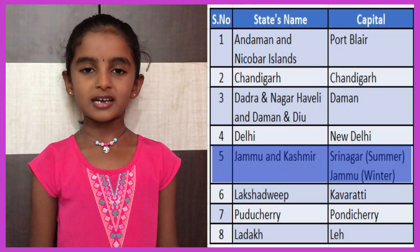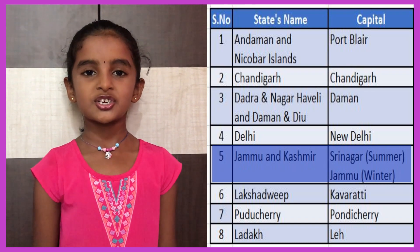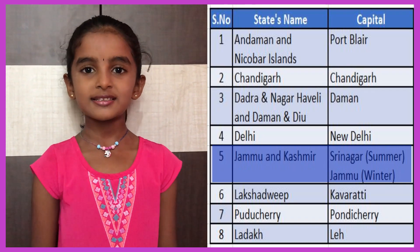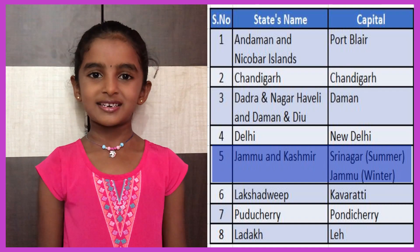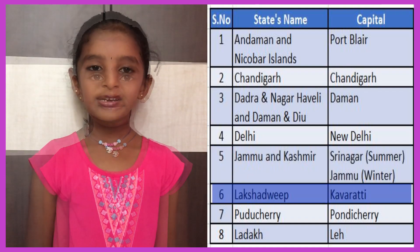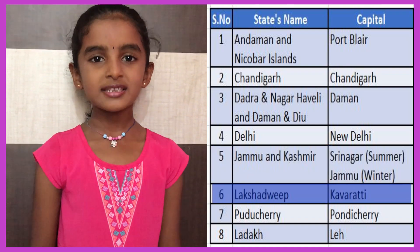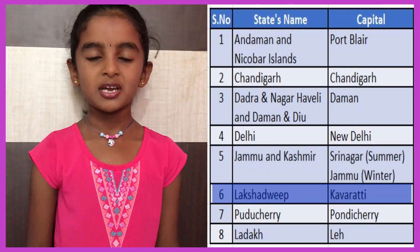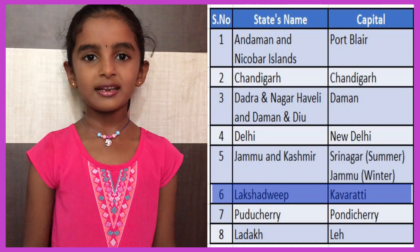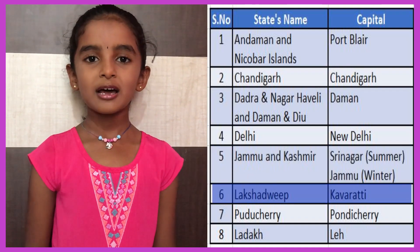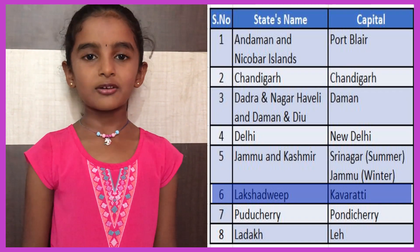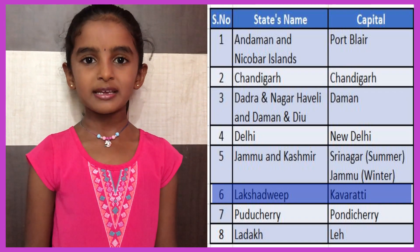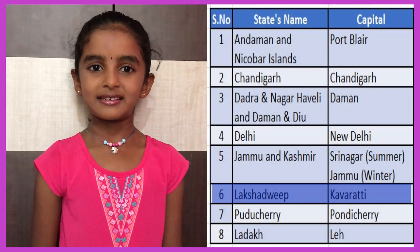The capital of Jammu and Kashmir is Srinagar in summer and Jammu in winter. Our next union territory is Lakshadweep. It is located in the Arabian Sea. The capital of Lakshadweep is Kavaratti.